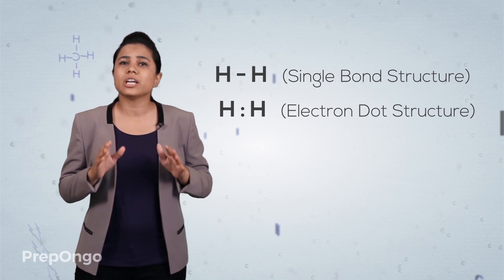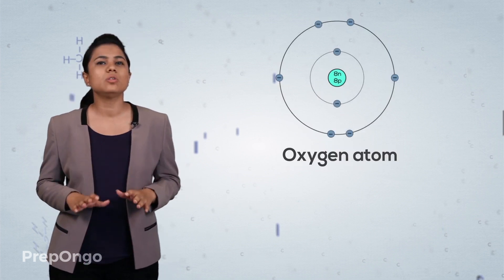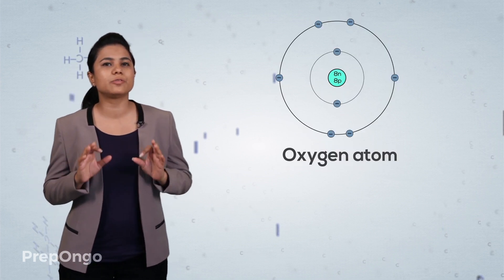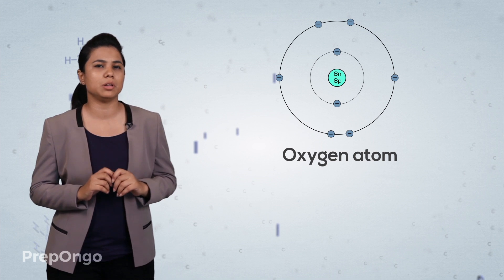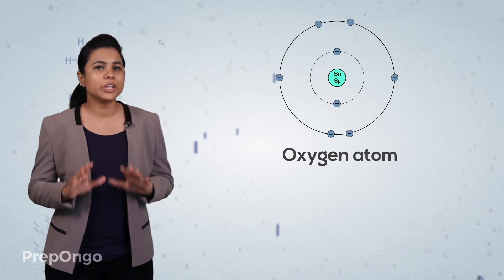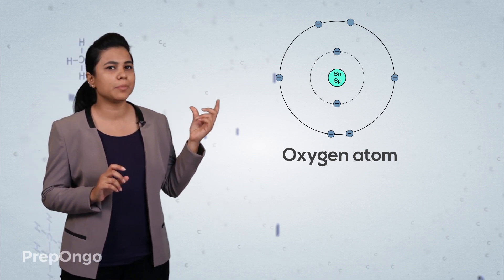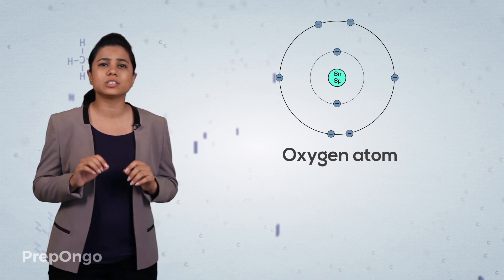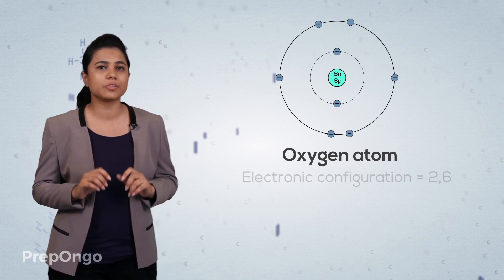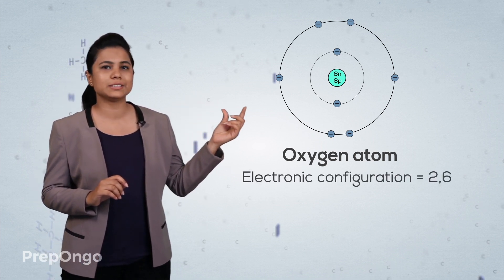Atoms can also share two or three electrons — we will be seeing examples ahead. Let's move on to our next example, which is of oxygen. The oxygen molecule is formed by a double bond.